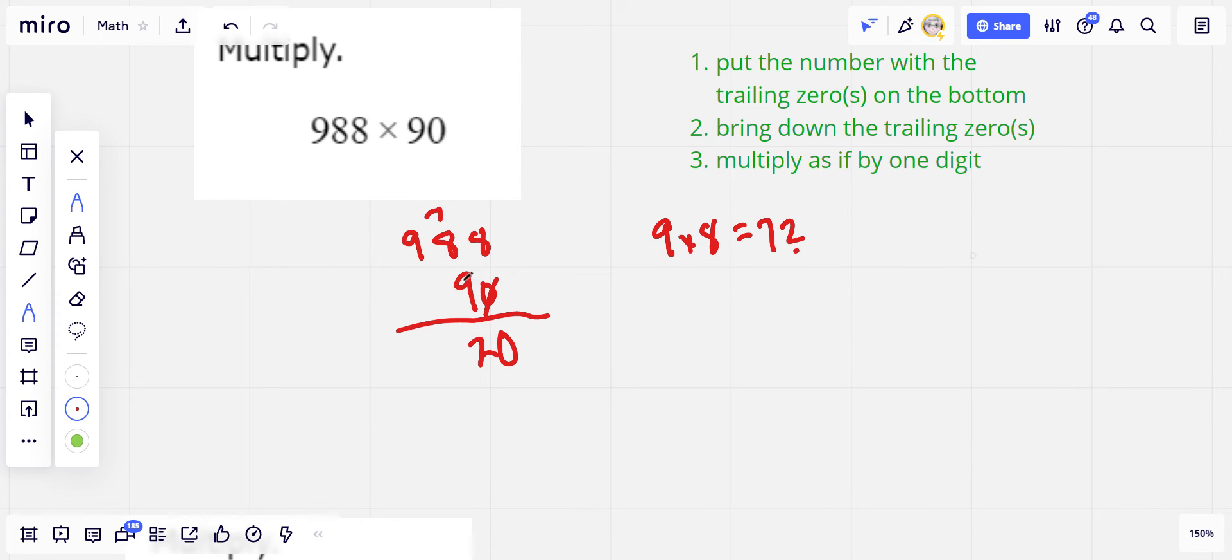Then we go on to the tens column. So 9 times 8 again and that is 72. But we have to add that 7 and that equals 79. So we'll put the 9 down here and the 7 gets carried.